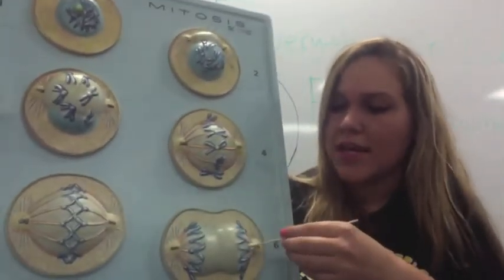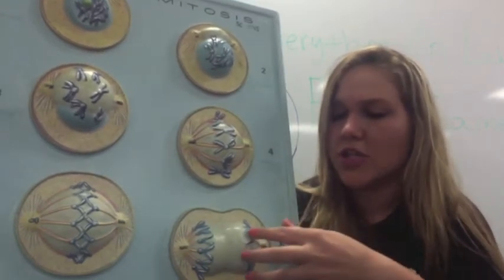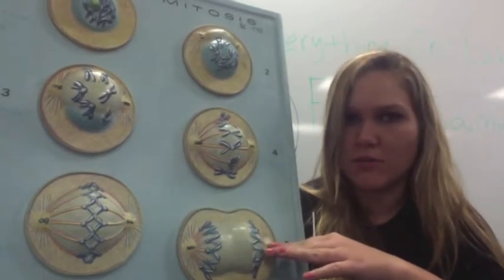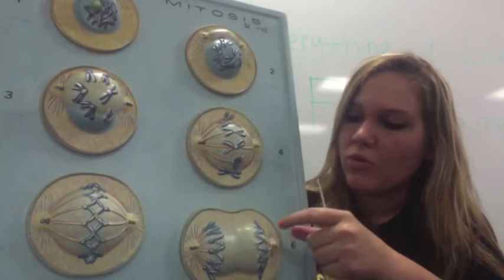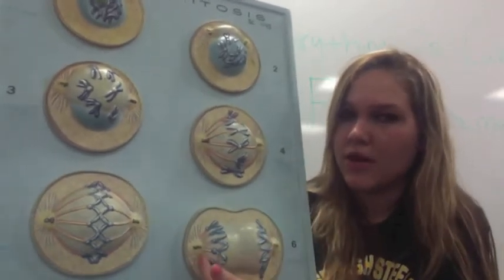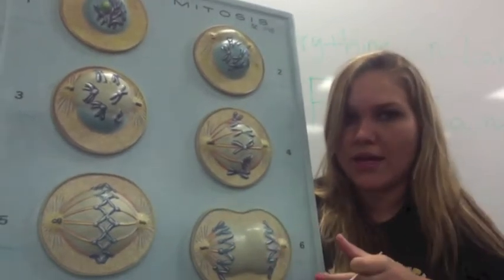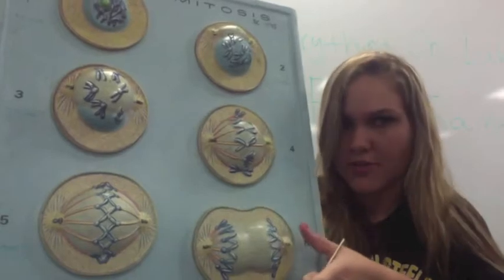Here is anaphase. Anaphase is when the spindle fibers are starting to actually pull the chromosomes apart, and at this point, they're not called chromosomes anymore. They're called sister chromatids because you have one pair on this side and one pair on the other side. So this is anaphase, and the way you can remember, anaphase is away. The spindle fibers are pulling the sister chromatids away from each other, so anaphase away.